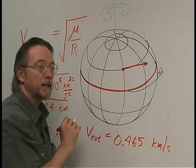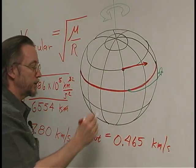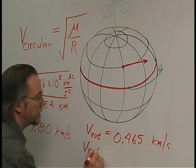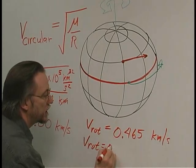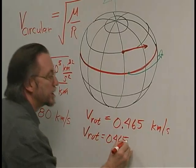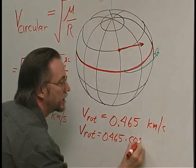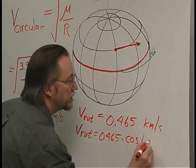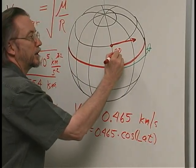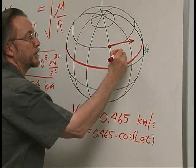By being at 28.5 degrees latitude, the rotational speed that we get from the Earth is a little bit less, and so it becomes 0.465 times the cosine of the latitude, which for Cape Canaveral is 28.5 degrees.